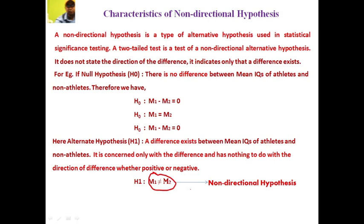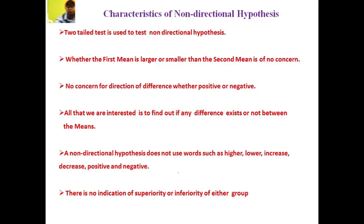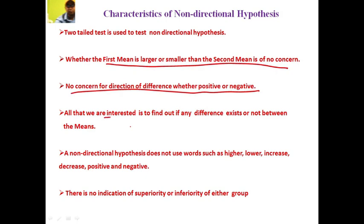The hypothesis only indicates that a difference exists; it is not talking about the direction, positive or negative. In a non-directional two-tailed test, whether the first mean is larger or smaller is of no concern. There is no concern for the direction of difference. A non-directional hypothesis does not use words such as higher, lower, increase, decrease, positive, or negative. There is no indication of superiority or inferiority of either group.